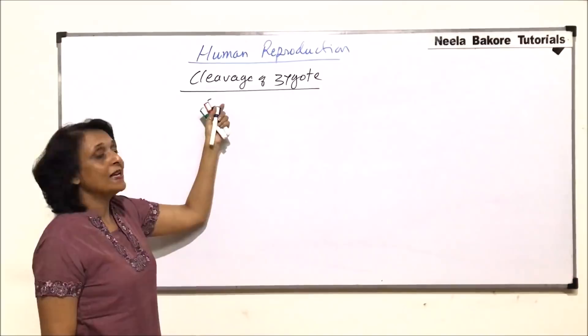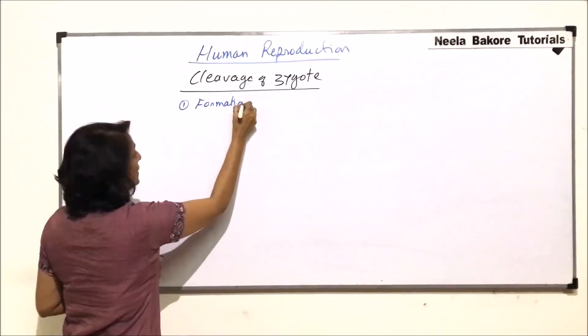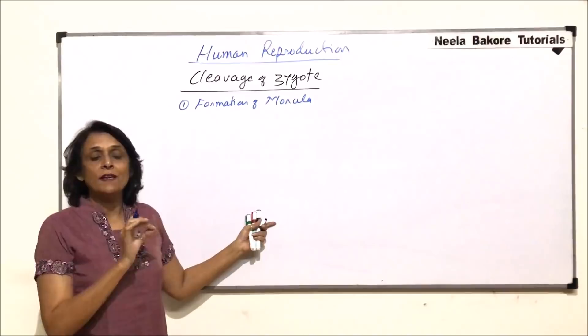The diploid zygote which is formed has to divide, and then there are multiple steps. When we are talking of this, the first is formation of the morula stage, or morula formation. To understand all these things and on which day which event takes place, we would just draw a very simple diagram.